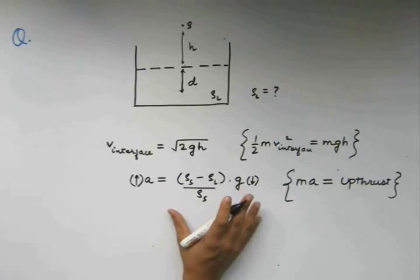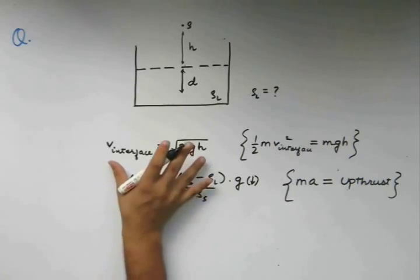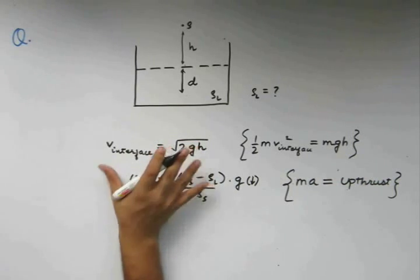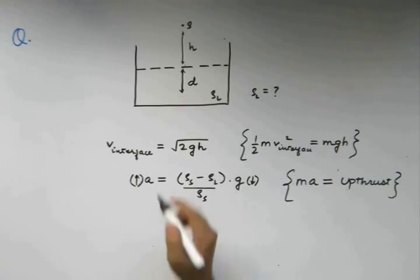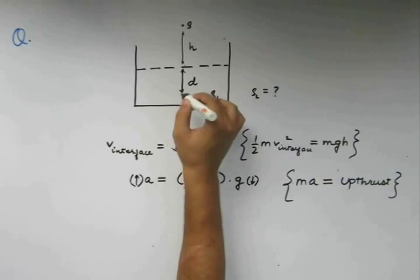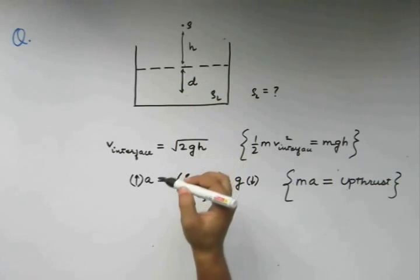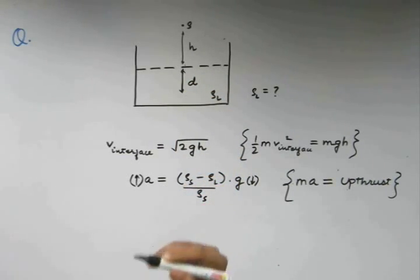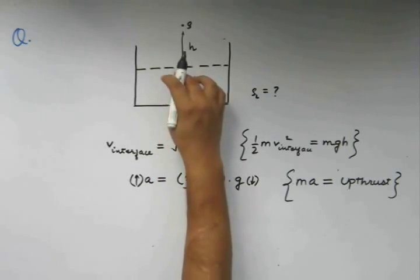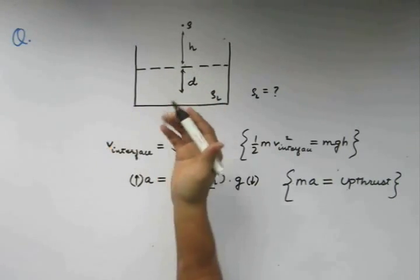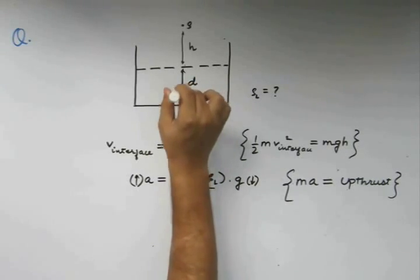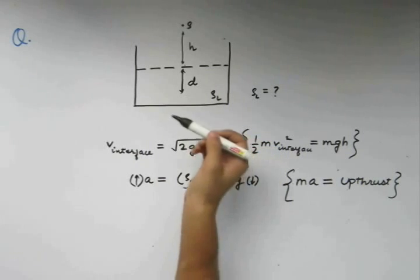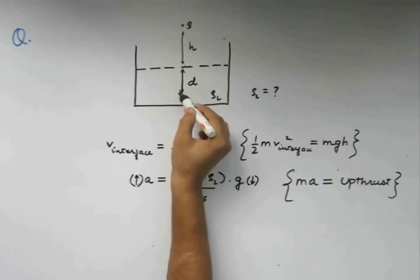We have the acceleration. We have the velocity at interface. Now, all we need to do is apply a simple kinematic equation to get what is the depth d. Because we say that it reaches a maximum depth d, we are already considering that this body will come to a halt at this depth. So, the final velocity will be zero at this point.